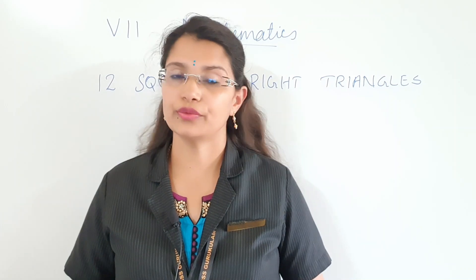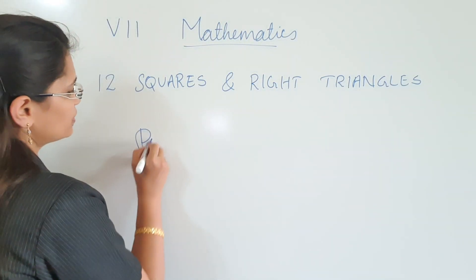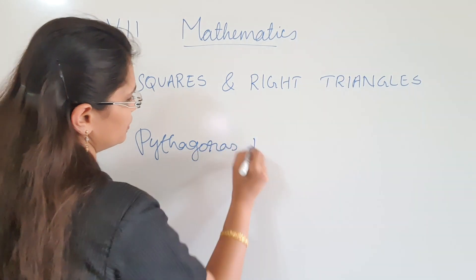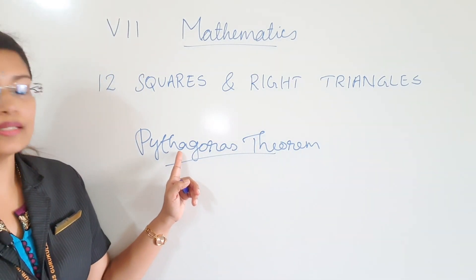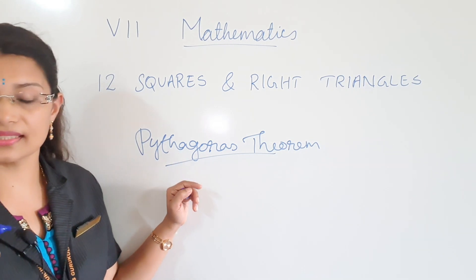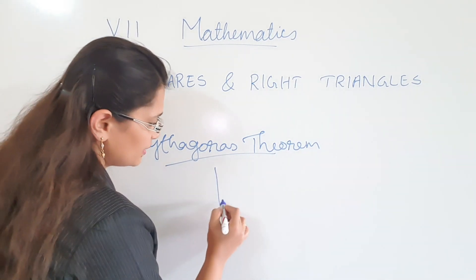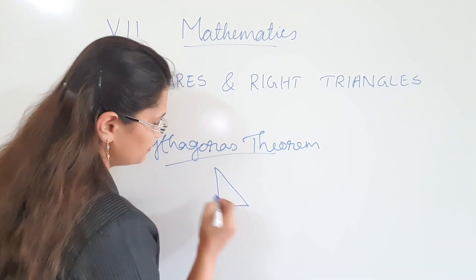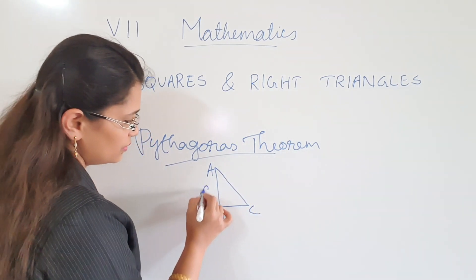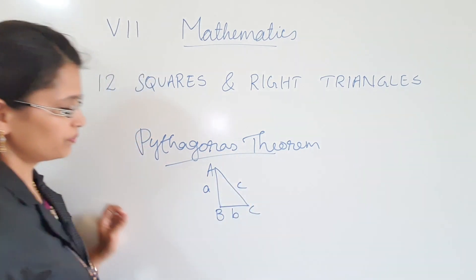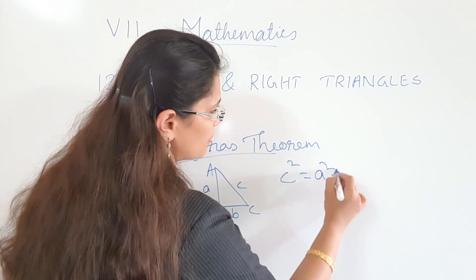In this chapter, first we are going to learn a famous theorem — that is Pythagoras theorem. Pythagoras is the name of a person; he is a Greek philosopher and mathematician. He stated that in a right-angled triangle, with vertices A, B, C, C square is equal to A square plus B square.